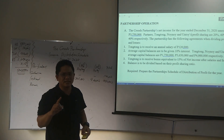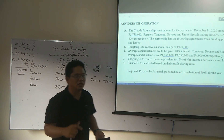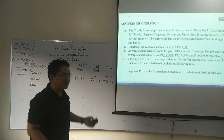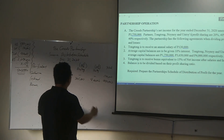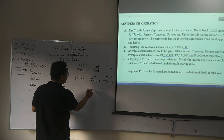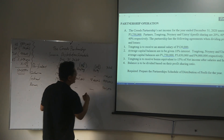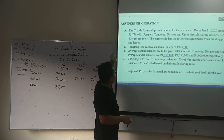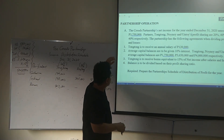Remember our discussion — normally the managing partner receives the bonus. So we've now covered all three provisions: number 1, annual salaries; number 2, interest on capital; number 3, bonus. Then the balance is to be divided based on their profit-sharing ratio.